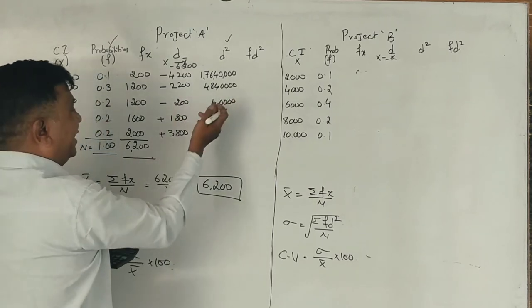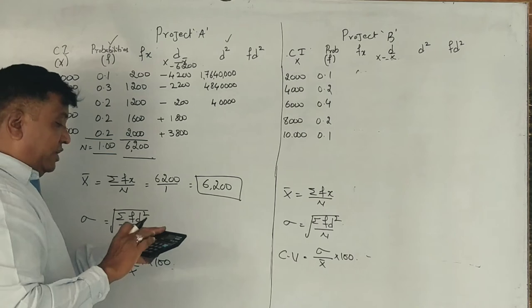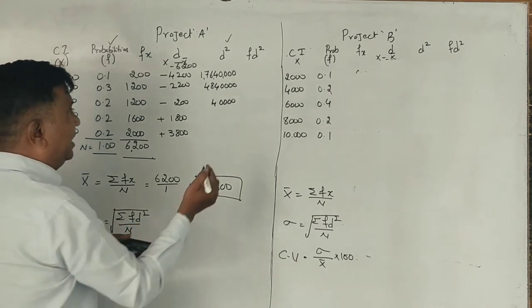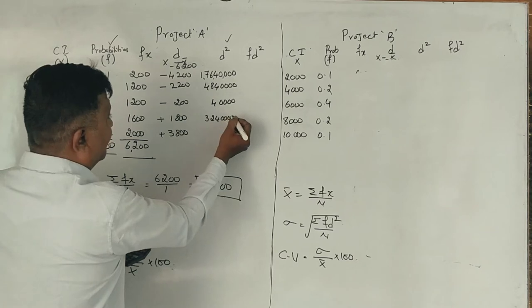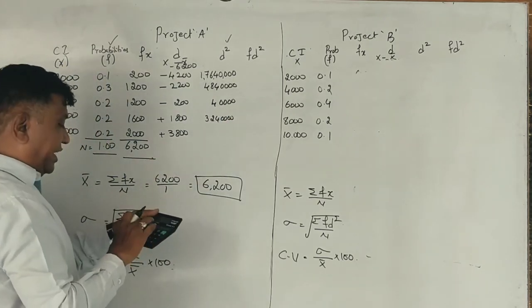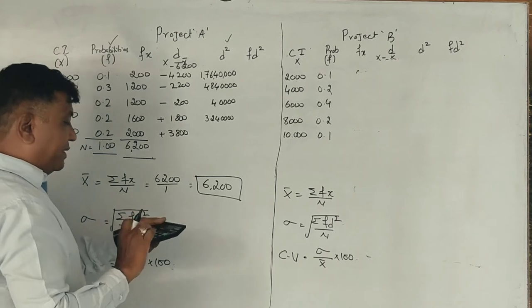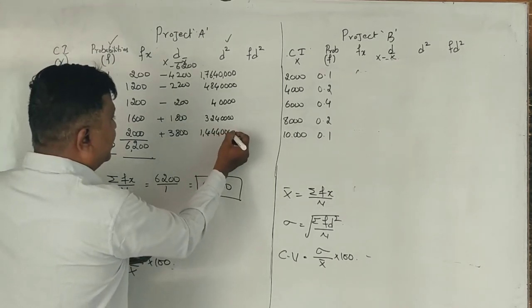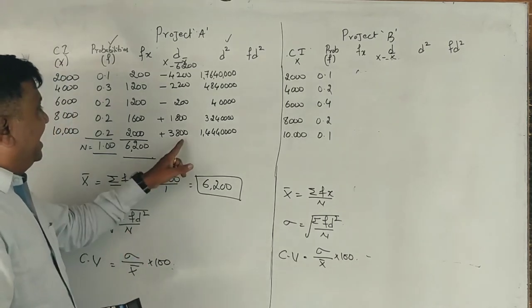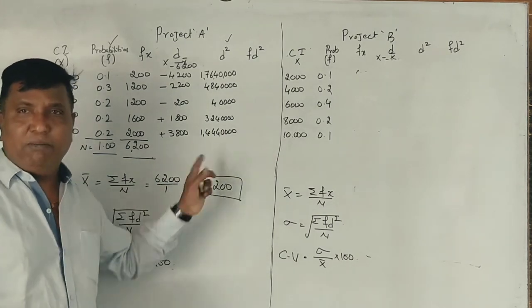Then 1,800 into 1,800 gives us 3,240,000. And 38 into 38 equals 1,444 with zeros: 1,444,000. Now D square.